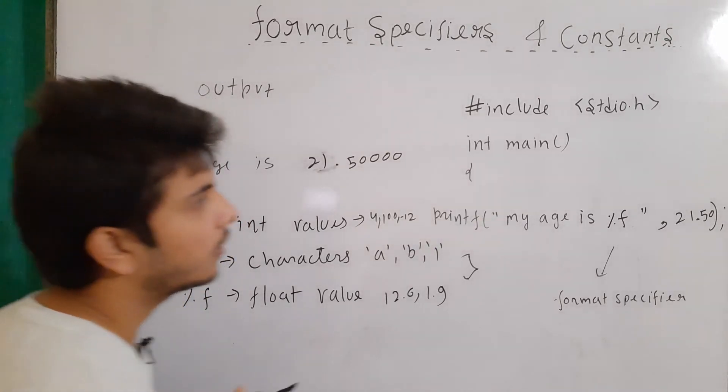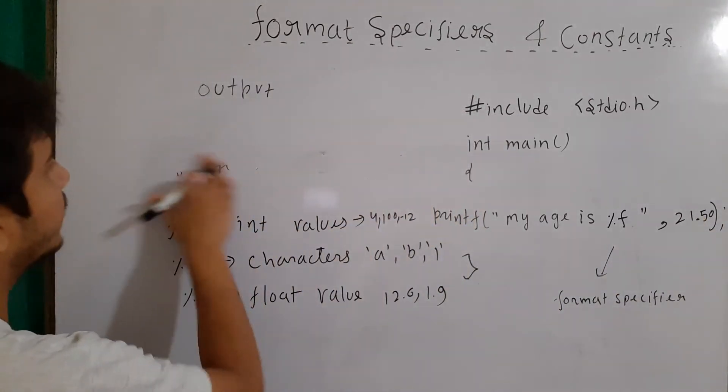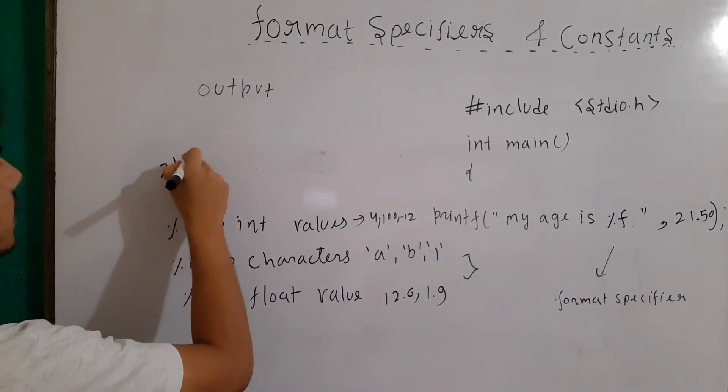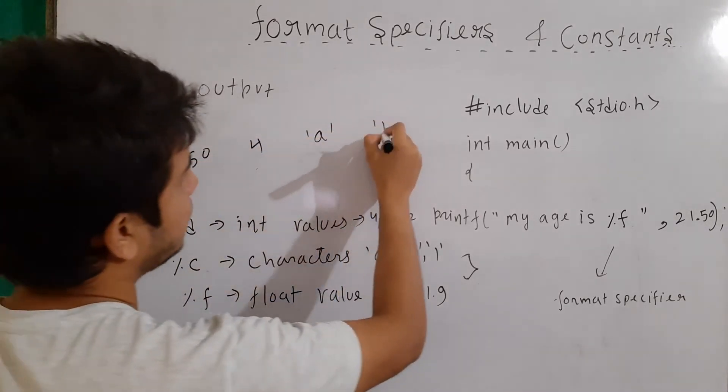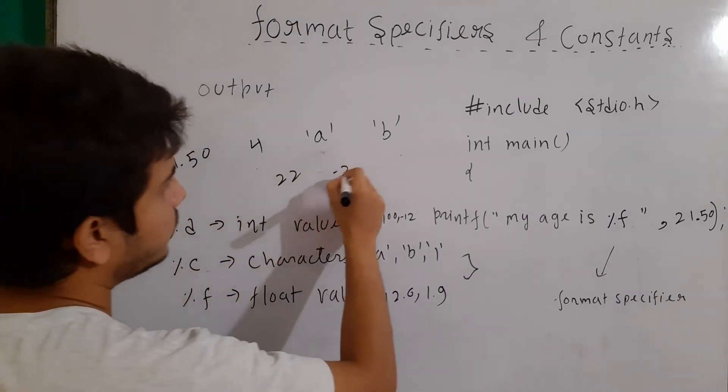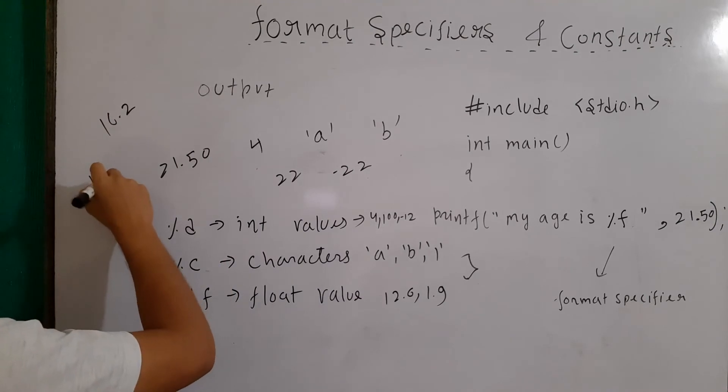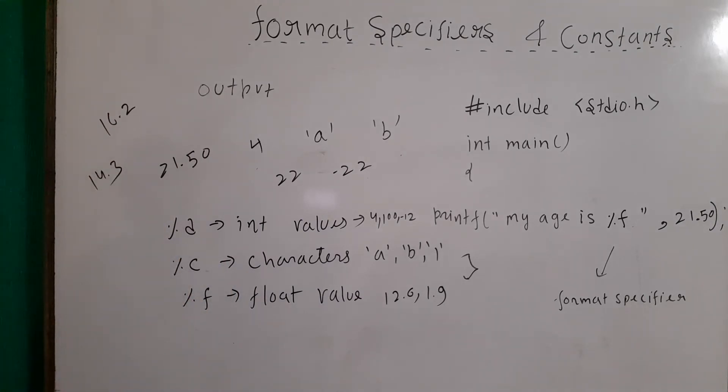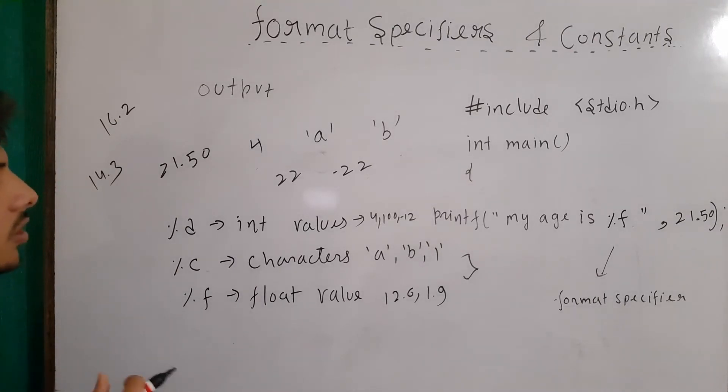Now, let's talk about the constants. Right here, 21.50 is a constant. 4 is a constant, character a is a constant, character b is a constant, 22 is a constant, minus 22 is a constant, 16.2 is a constant, 14.3 is a constant.